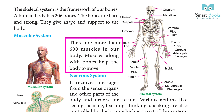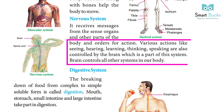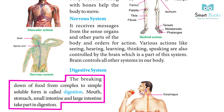Muscles, along with bones, help the body to move. The nervous system receives messages from the sense organs and other parts of the body and sends orders for action. Various actions like seeing, hearing, learning, thinking, and speaking are controlled by the brain, which is part of this system. The brain controls all other systems in our body.